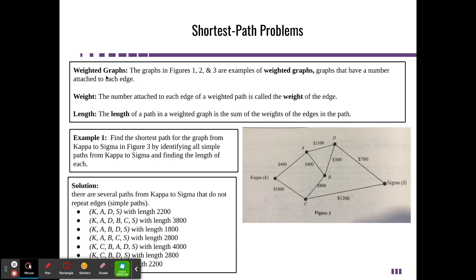A couple vocabulary words. Weighted graphs are graphs that have a number attached to each edge. These could be distances, could be dollar amounts, could be any number. The weight is the number attached to the edge. Like 400 is the weight from K to A, or 1100 is the weight from A to D. The length would be the sum of the weights in the path. So if I want to go from K to S across the top, that would be 400 plus 1100 plus 700, so we would be at 2200. That would be the length of that path, which is made up of the weights.